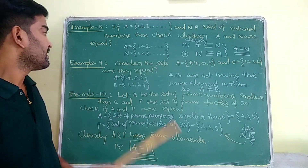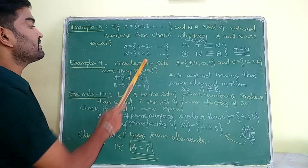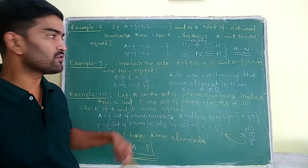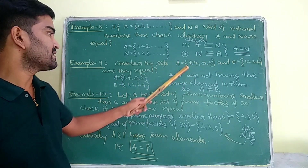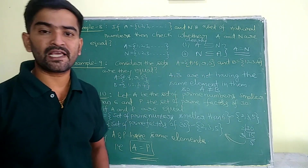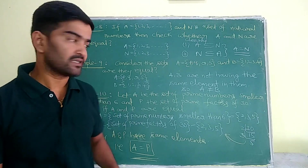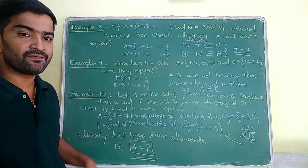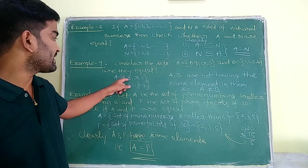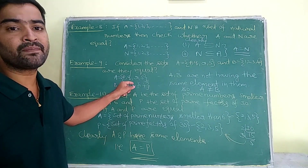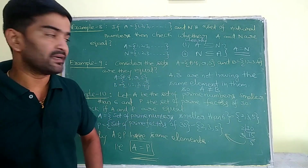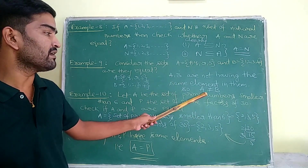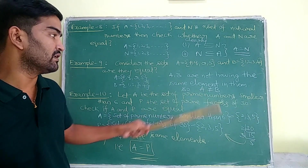Example 9: Consider sets A and B — are they equal? A = {P, Q, R, S} and B = {1, 2, 3, 4}. It is clear that A and B are not having the same elements, so A and B are not equal.